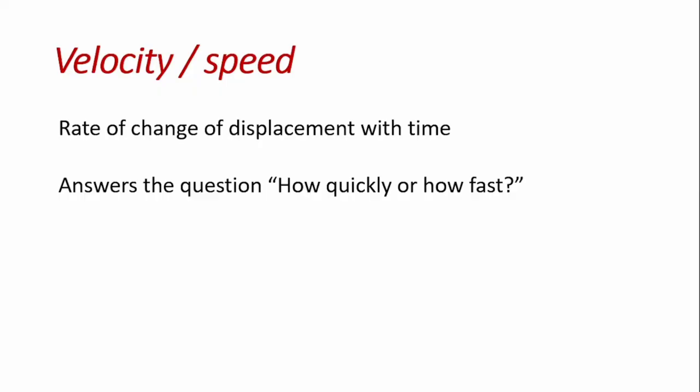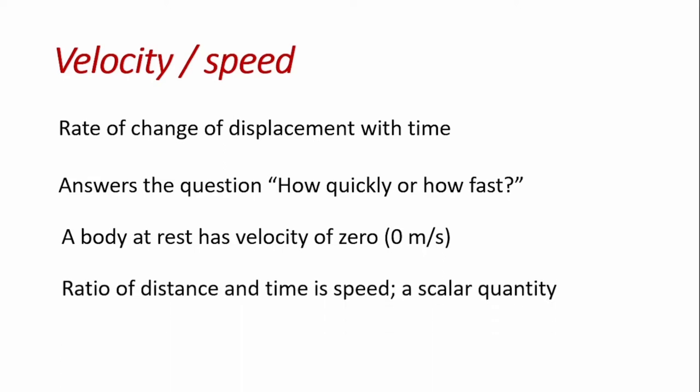Velocity and speed. Velocity is just the rate of change of displacement with time. It answers the question how quickly or how fast an object would arrive or how fast an object arrived at a particular position. A body at rest is known to have zero velocity because it's not moving. Then the ratio of distance and time is speed and is a scalar quantity. The SI unit is meter per second, whereas velocity is a vector quantity.